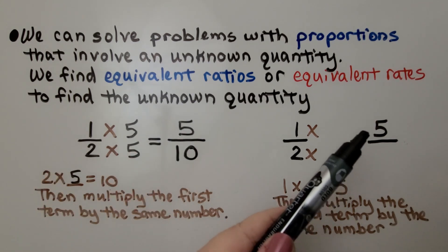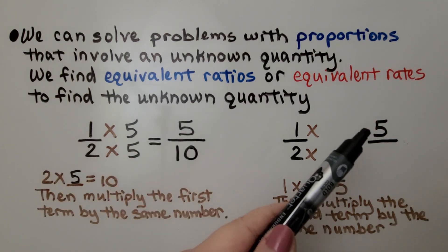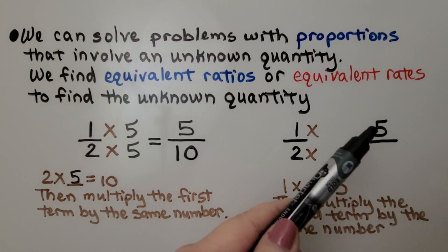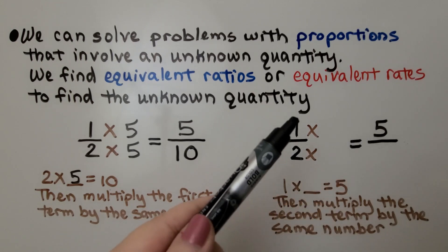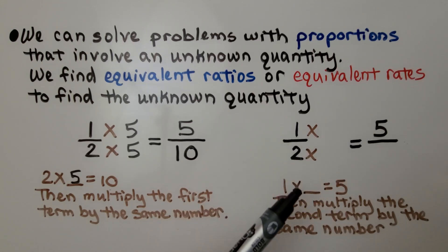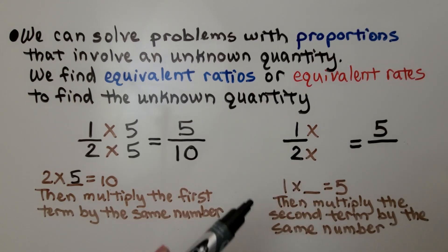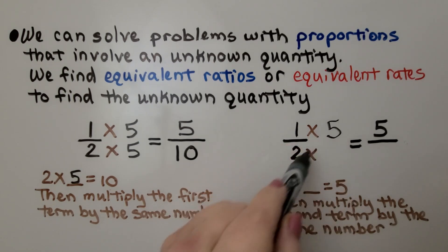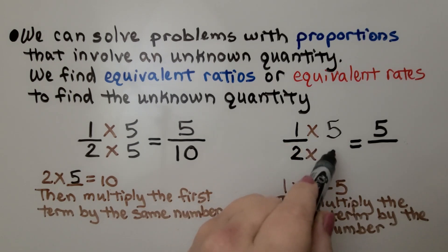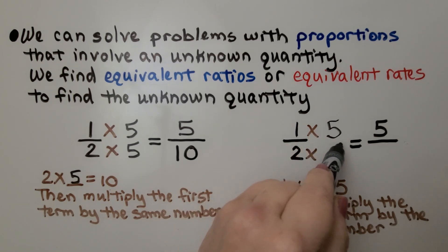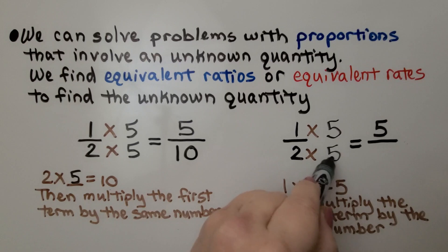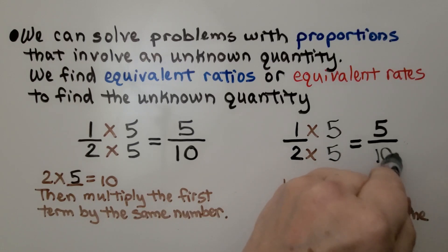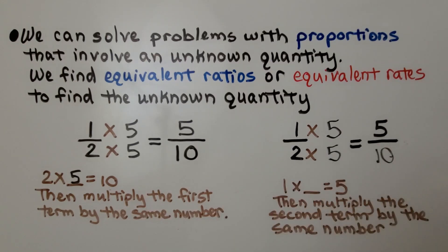If we're given the first term for our equivalent ratio, we think one times some number equals five — that would be five. We have to multiply the two by the same amount, and we know the denominator is ten.